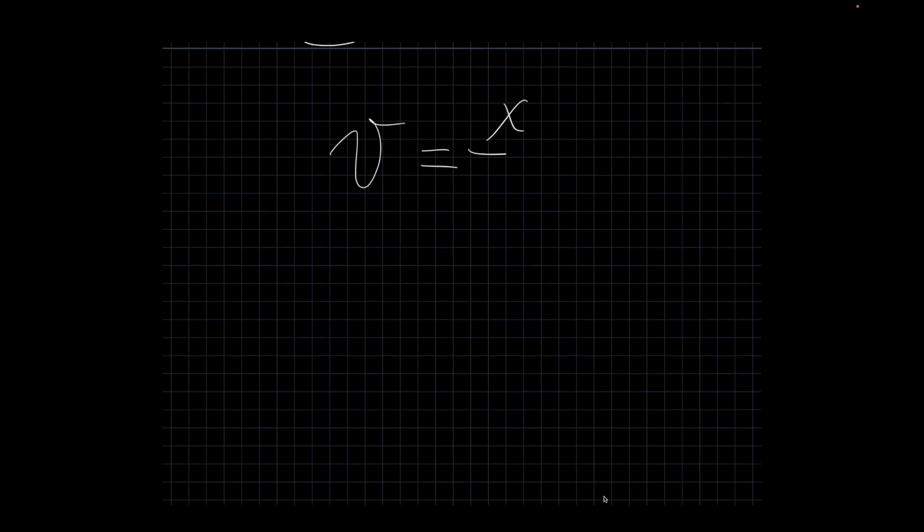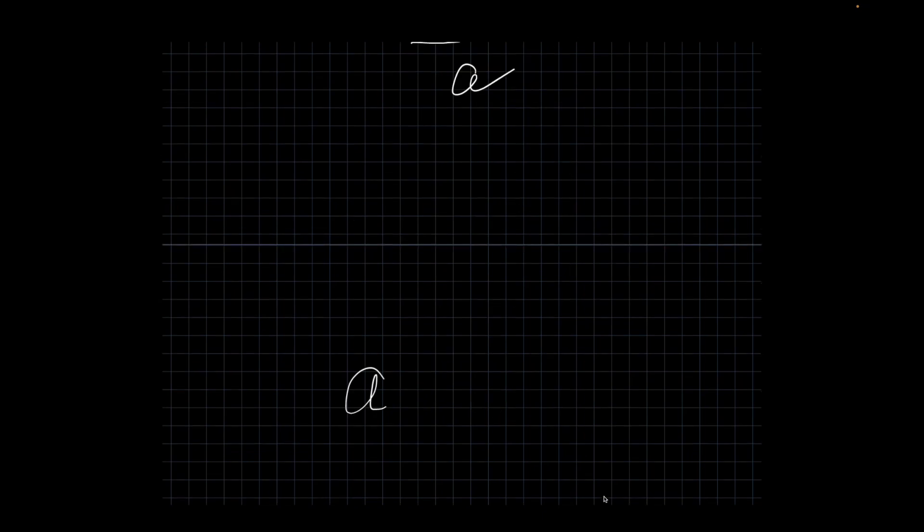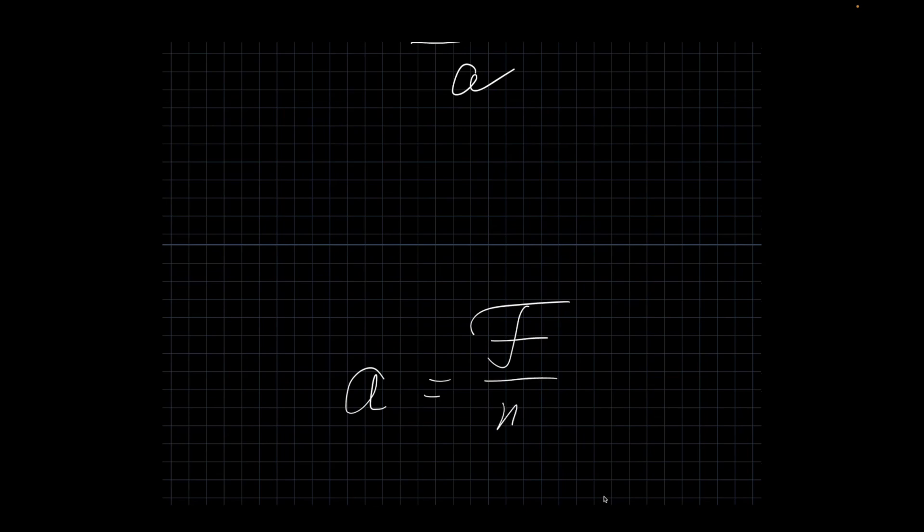Speed is distance over time. Time is distance over speed. Acceleration. How do I find T? Change in V over acceleration. Acceleration equals force over mass. Mass equals force over acceleration.